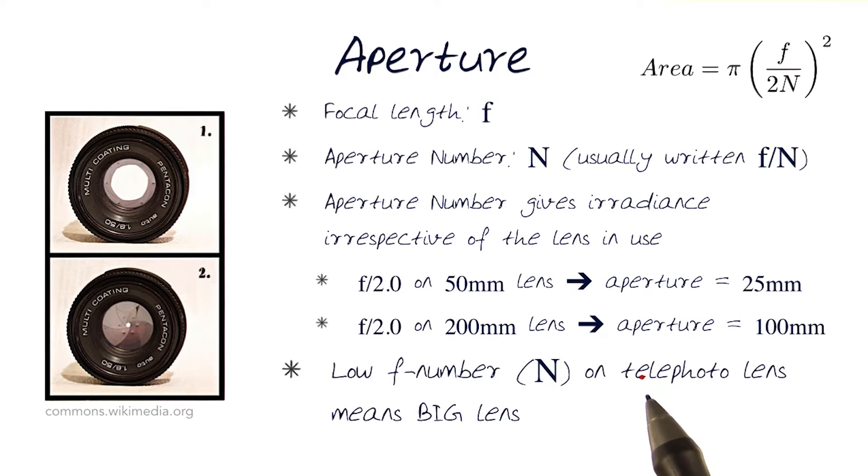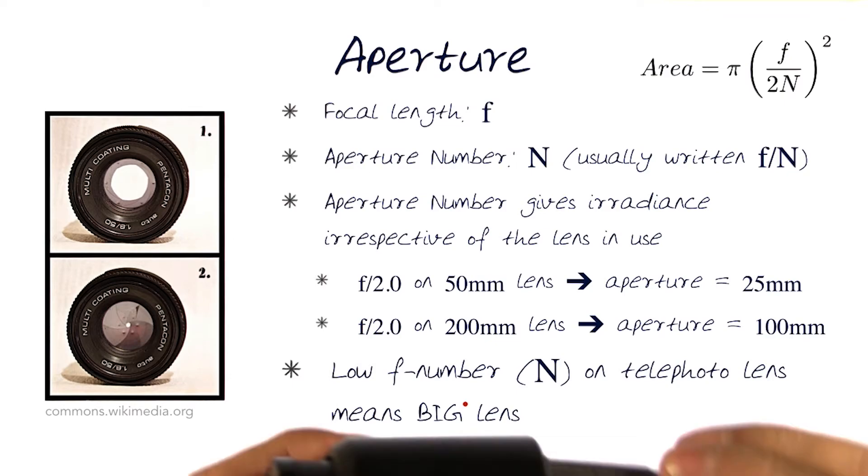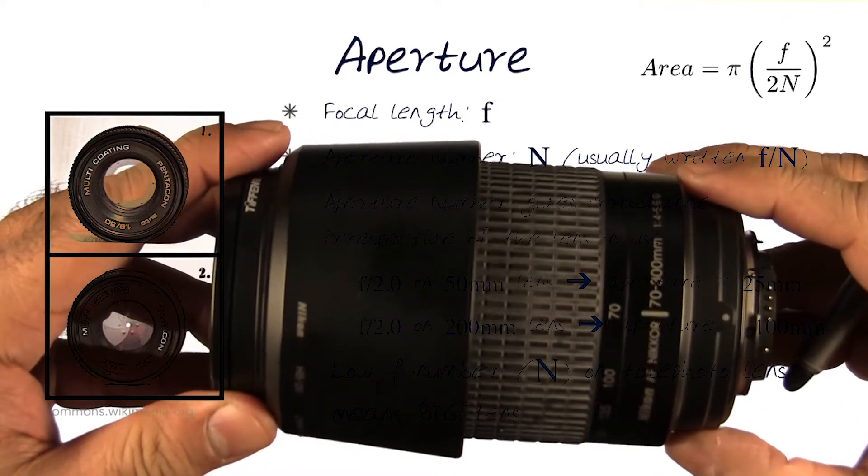So this should start telling us that if the f-number is low for a telephoto lens, that basically means it should be a much bigger, wider lens.